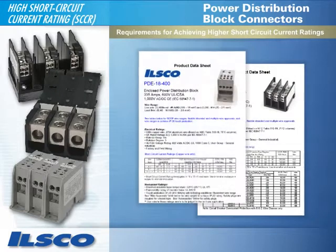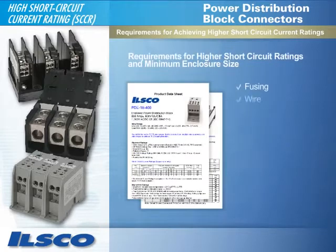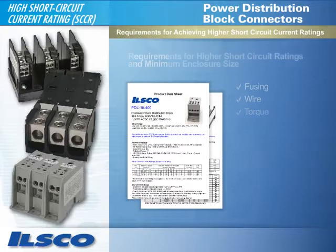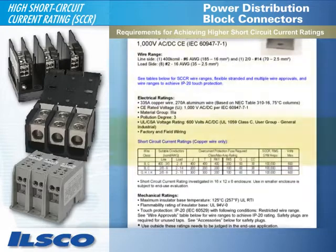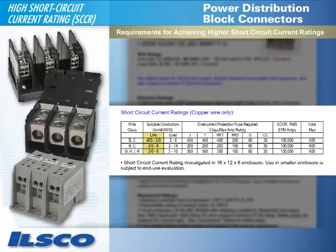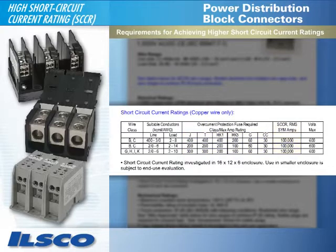The product data sheets for ILSCO's high SCCR blocks provide charts for determining the correct fusing, wire, and torque requirements for higher short-circuit current rating and minimum enclosure size. The short-circuit current ratings chart allows you to determine the line and load conductors, along with overcurrent protection fuse combinations needed in conjunction with the new power distribution blocks to achieve a high SCCR. Each line in this chart must be read independently to determine a working combination of components.